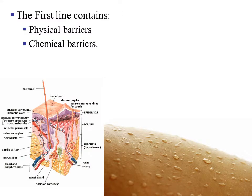We will talk extensively about the first line of defense in this slide show. Within the first line of defense, we have two categories: the physical barriers and the chemical barriers. The physical barriers separate the inside from the outside, whereas the chemical barriers are chemicals that your body will release or secrete to help protect you from outside elements.